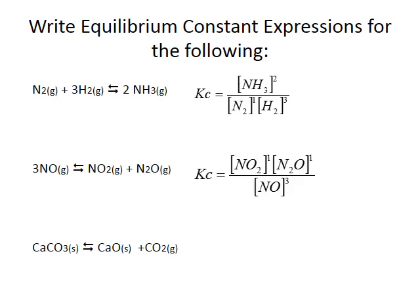For the decomposition of nitrogen monoxide, I have nitrogen dioxide and dinitrogen oxide as products with coefficients of one on the top. Nitrogen monoxide has a coefficient of three, so it goes on the bottom with an exponent of three.